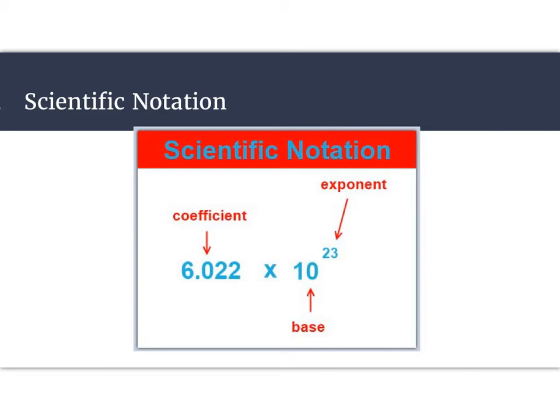So to get started, our scientific notation, we have our coefficient. This is between 1 and 9.999, just less than 10. Then we have our base, which is always times 10. And then our exponent. This can be negative or it can be positive.